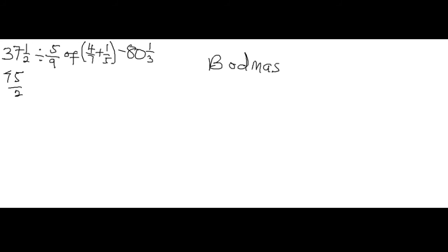After converting, we get: 75/2 divided by 5/9, of, bracket (4/7 plus 1/5), minus 241/3. We have now converted both mixed fractions to improper fractions — 37½ becomes 75/2 and 80⅓ becomes 241/3 — and we are ready to dive into solving.